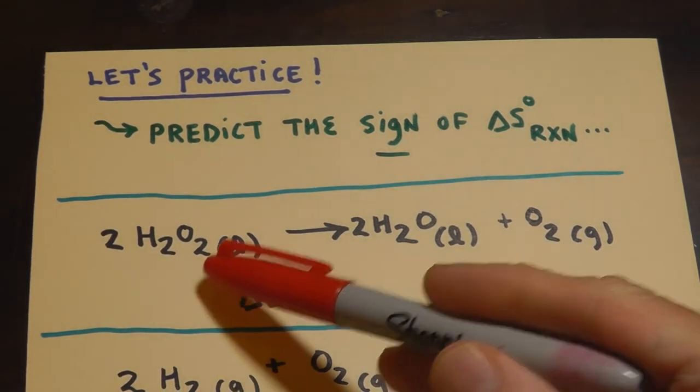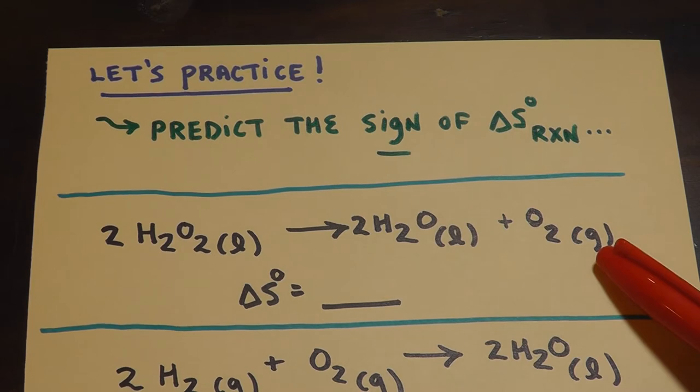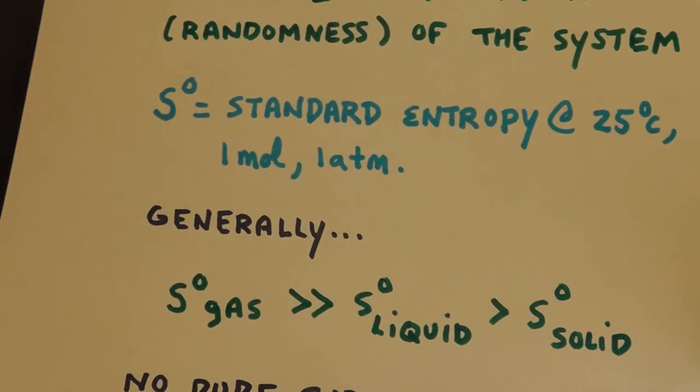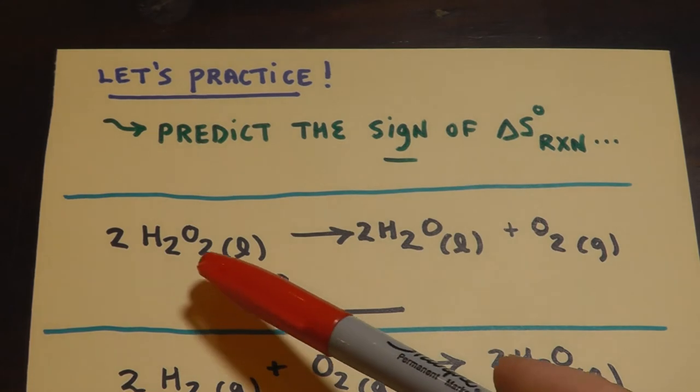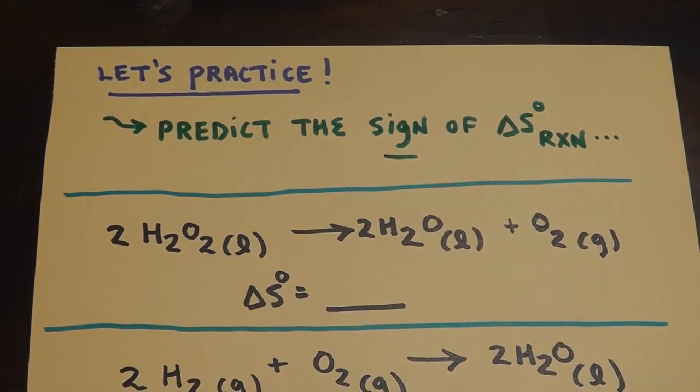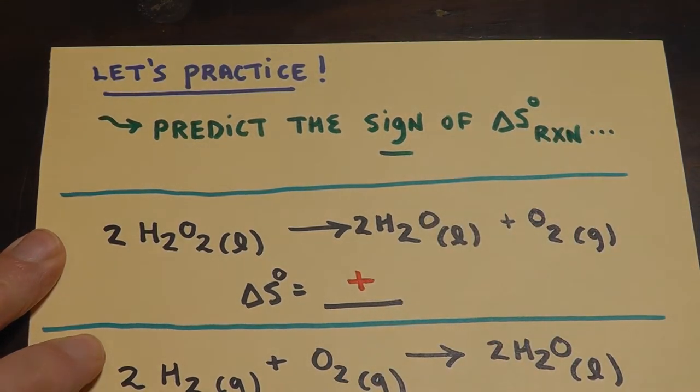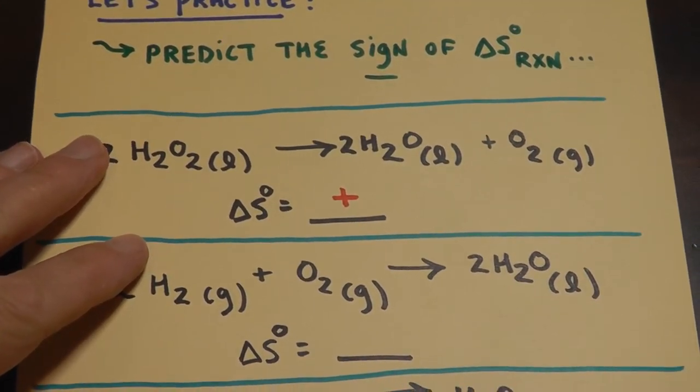Let's predict the sign of delta S of the reaction. Hydrogen peroxide producing water and oxygen gas. We're making a gas - gases have the highest entropy. We've got a pure substance becoming a mixture. We've got two things pushing this, so delta S is going to be positive. That's all we need to know for now - is it going positive or negative?